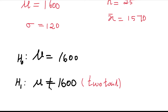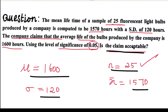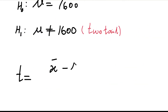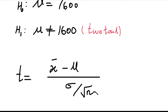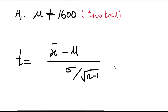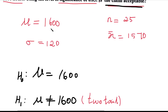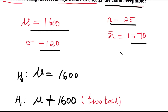Since this is a two-tailed test, we proceed to write the formula for the test statistic. The sample size is 25, which is less than 30, so this is a small sample problem — we use the T-distribution. The formula uses: x̄ = 1570, μ = 1600, σ = 120, and n = 25.